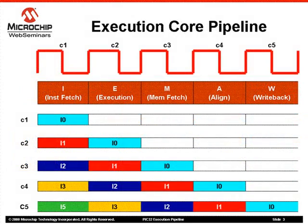As mentioned briefly, the PIC32 Execution Core employs a 5-stage pipeline. This slide shows all 5 stages and graphically describes how instructions proceed in the pipeline. The 5 stages are: 1 - Instruction Fetch, 2 - Execution, 3 - Memory Fetch, 4 - Memory Align, and 5 - Memory Writeback.